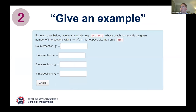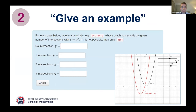The second idea I return to a lot is getting students to construct examples. Here's a question where students give an example of a quadratic that has a certain number of intersections with y equals x squared, and next to this there's an applet where they can vary the coefficients and see the effect on the graph. The idea is to get students working at a higher level — not just taking things I give them, but exploring their own example space and constructing from that.